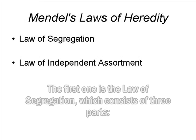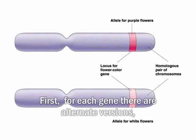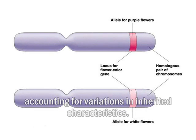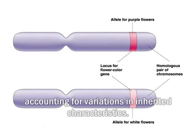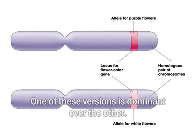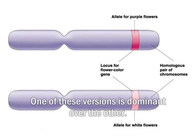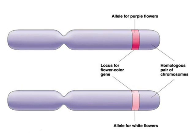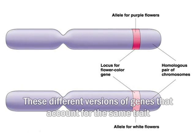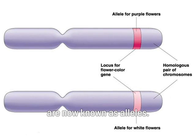The first one is the Law of Segregation, which consists of three parts. First, for each gene there are alternate versions, accounting for variations in inherited characteristics. One of these versions is dominant over the other. These different versions of genes that account for the same trait are now known as alleles.